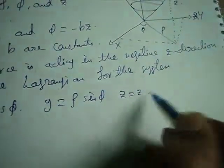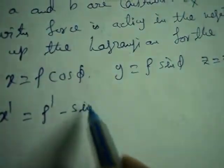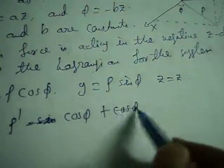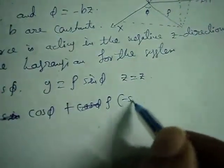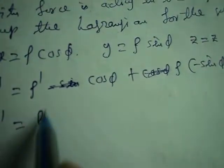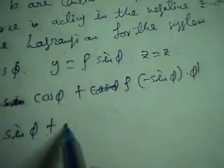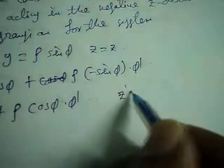And z equal to z. So we can write x-dot equal to rho-dot cos phi minus rho sin phi times phi-dot, and y-dot equal to rho-dot sin phi plus rho cos phi times phi-dot, and z-dot equal to z-dot.